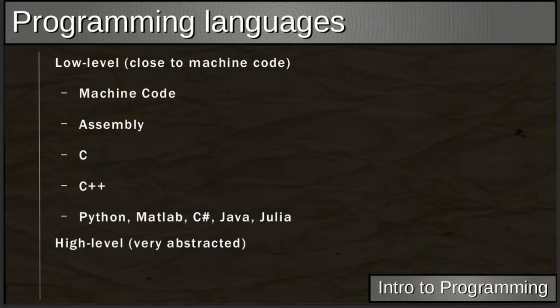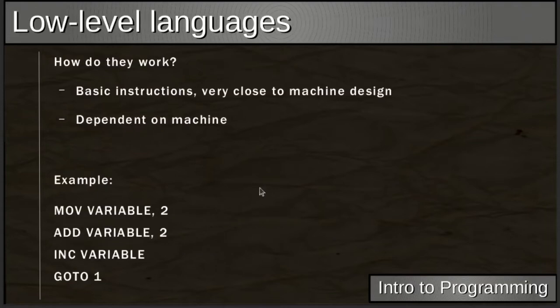Low-level languages include machine code and assembly. High-level starts at C and goes up to C++, Python, MATLAB, C#, Java, and Julia — these are highly abstracted languages close to our natural way of explaining operations to a computer. Machine code, by contrast, is very close to how the hardware manages things. Low-level language operations are basic instructions, very close to machine design.